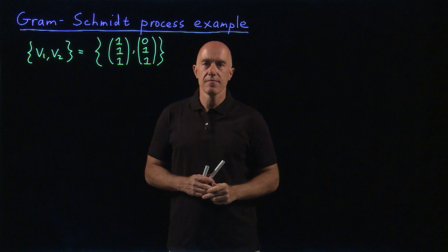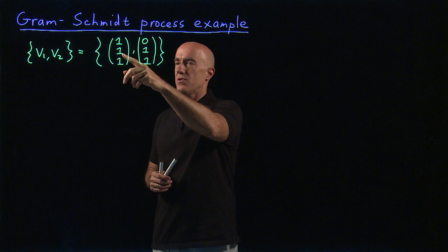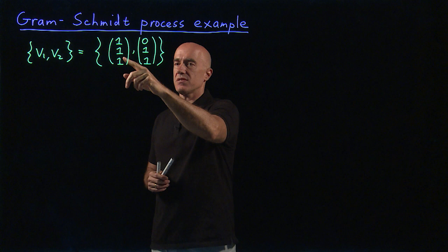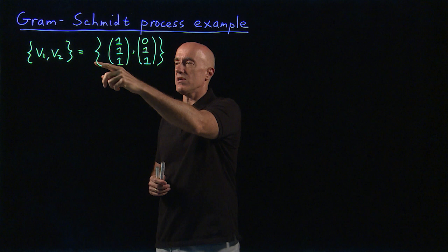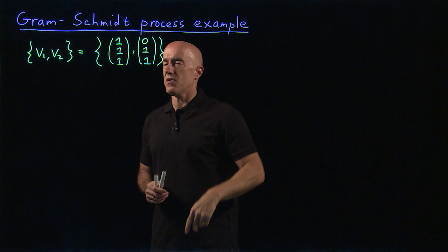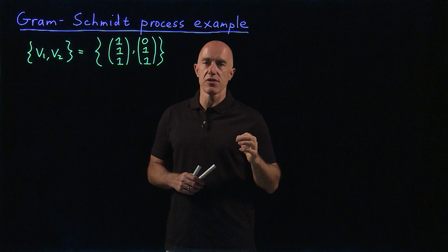These are not orthogonal, right? If you do V1 transpose V2, you would have 1 times 0 plus 1 times 1 plus 1 times 1 would be 2, not 0. So these are not orthogonal vectors. They're not normalized either. V1 transpose V1 equals 3 and V2 transpose V2 equals 2.